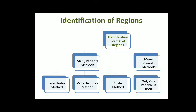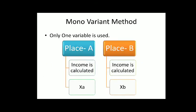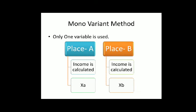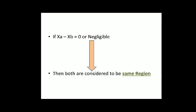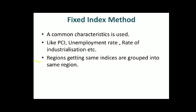Now let's focus on the identification of regions. First, we'll talk about identification of the formal region. To identify a formal region, we can use different types of methods. Where there is only one variable, that is called the mono-variant method, and where there are more than one variable, that is called the multi-variant method. In the mono-variant method, let's say place A has income X-A and place B has income X-B. If we compare the income of two regions and X-A minus X-B equals zero or is negligible, then both belong to the same region; otherwise they are different regions.